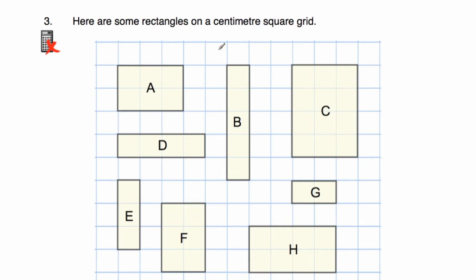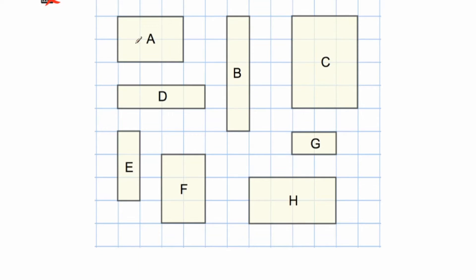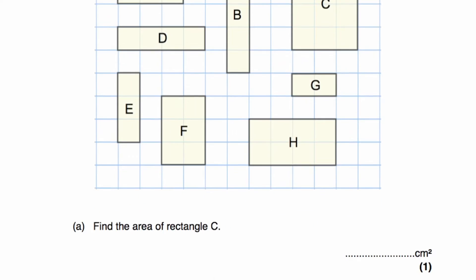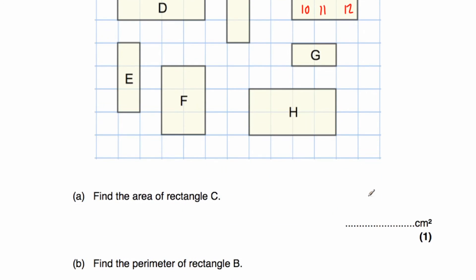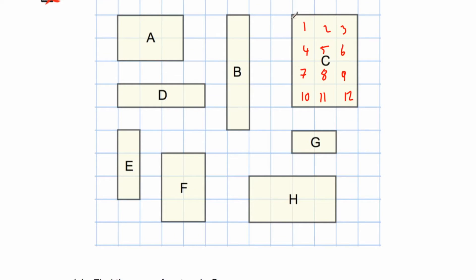Question number three: here are some rectangles on a centimetre square grid — rectangles A, B, C, D, E, F, G, H. Part A says: find the area of rectangle C. Because this is a centimetre square grid, each square measures one centimetre by one centimetre, so each square has an area of one centimetre squared. Counting the squares inside rectangle C gives twelve, so the area is twelve centimetres squared. Alternatively, the rectangle has a length of four and a width of three, and four times three is twelve.